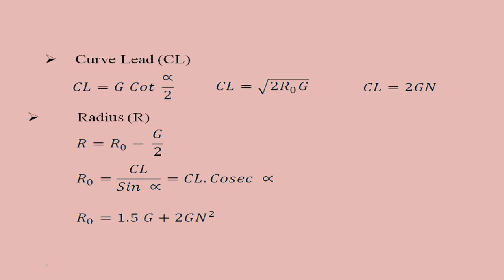Curve lead CL is found from three expressions: CL equals G·cot(alpha/2), or CL equals root of (2·R0·G), or CL equals 2GN. These expressions are derived from the geometry of the figures by projecting curves as straight lines onto the main track and analyzing the resulting triangles.